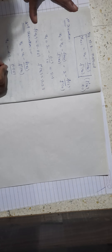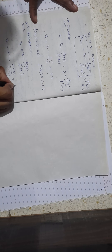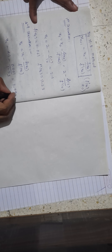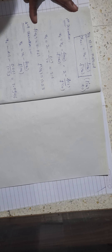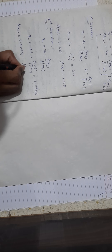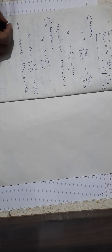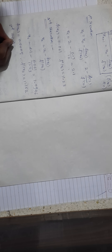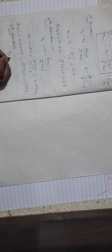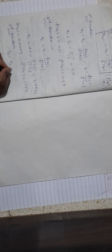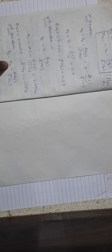Second iteration (n = 1): x₂ = x₁ - f(x₁) / f'(x₁) = 2.1 - 0.061 / 11.23 = 2.0946. We then find f(x₂): substituting x₂ = 2.0946 into f(x) gives f(x₂) = 0.0004, and f'(x₂) = 11.162.